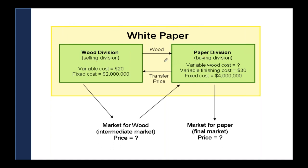For that, what we need to do is determine what is the cost of wood being transferred to the other division. Say the variable cost of a piece of wood transferred to the other department is $20, and the fixed cost of the entire department is say $2 million. What is the market price per piece to outsiders, and what should be the price transferred to the paper division? We will discuss in detail. Any goods or services transferred internally between departments or companies of the same group company is transfer pricing.